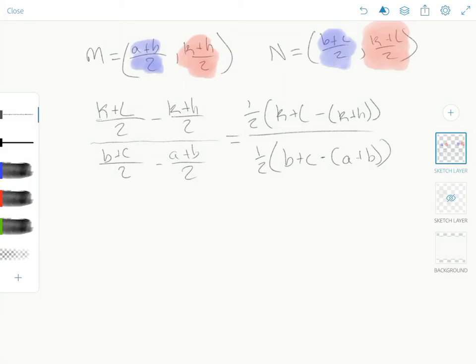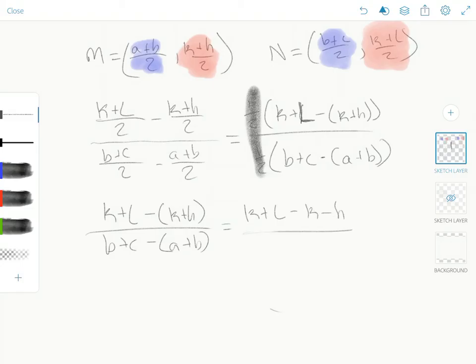So now remember this is an L. Cancel out the one half and that leaves us with K plus L minus the quantity K plus H over B plus C minus the quantity A plus B. Distribute that negative and we get K plus L minus K minus H over B plus C minus A minus B. And then we can cancel off like terms. Positive K and negative K cancel, positive B and negative B cancel, leaving L minus H over C minus A.